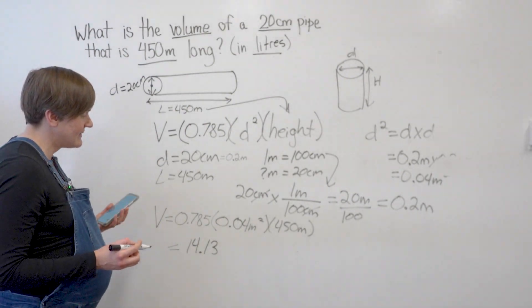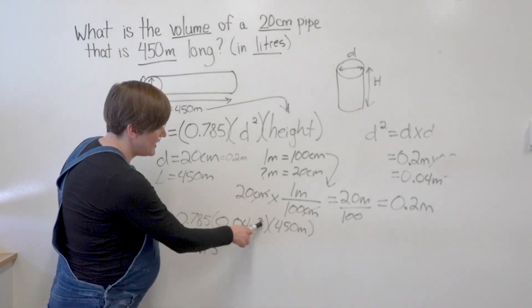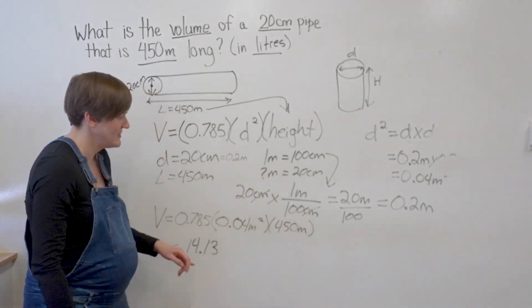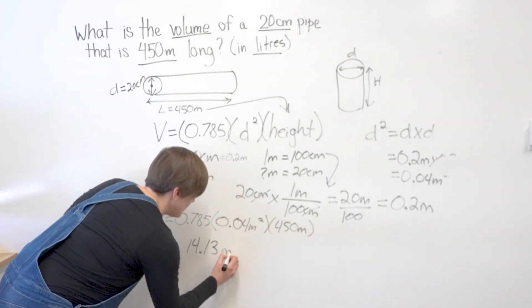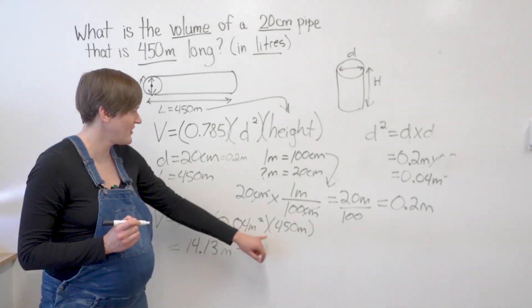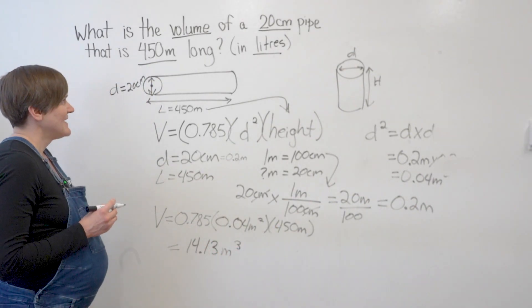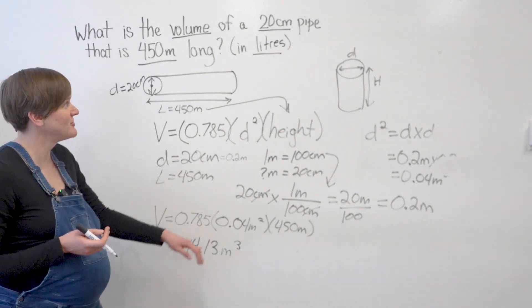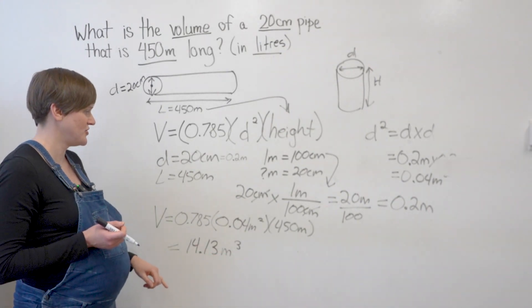Now for units, I've got m squared here and another m here. So I'm going to end up with meters cubed. Two m's here. Another one. So 3. So this is good, but it's not my final answer because I need a final answer in liters. I've got it in meters cubed.